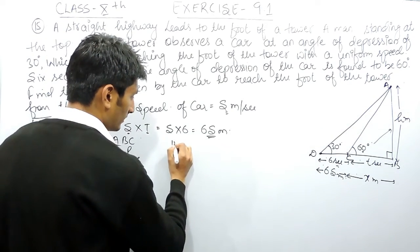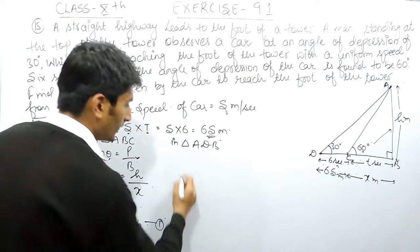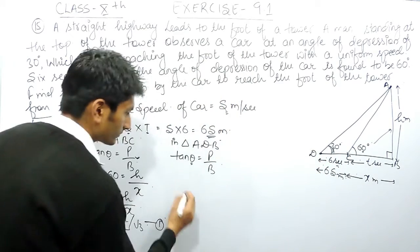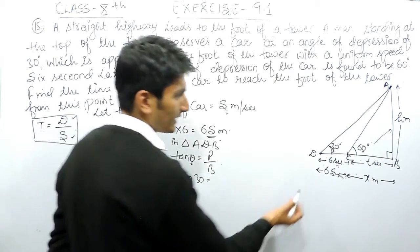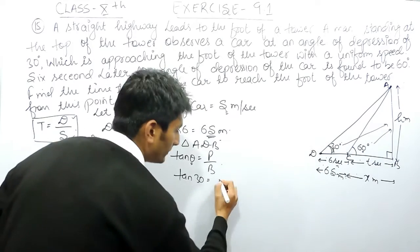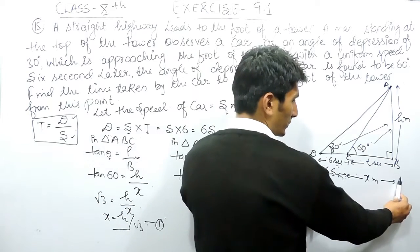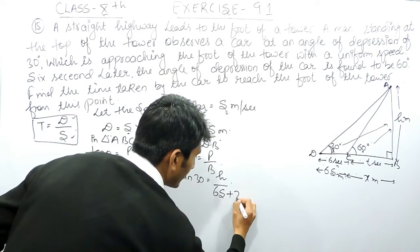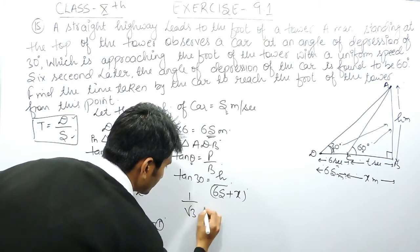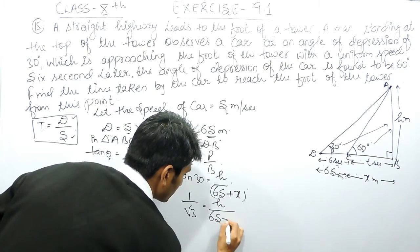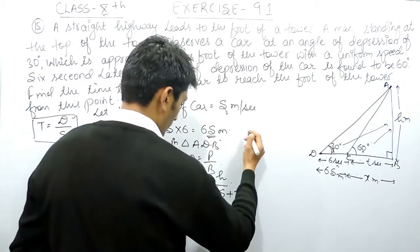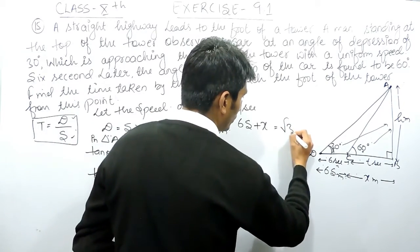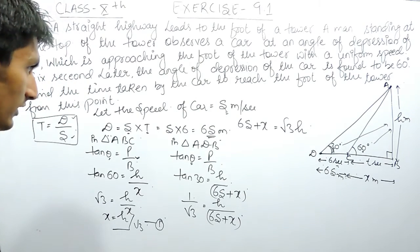Similarly, in the second triangle ADB, which is the bigger one, the ratio for tan theta equals perpendicular upon base. Here theta is 30 degrees, so tan 30 equals h upon the base. The perpendicular remains h meters, and the base of this bigger triangle is the complete distance, which is 6s plus x meters. The value of tan 30 is 1 upon root 3, so 1 upon root 3 equals h upon 6s plus x. Cross multiplying gives 6s plus x equals root 3 times h. This is our second equation.